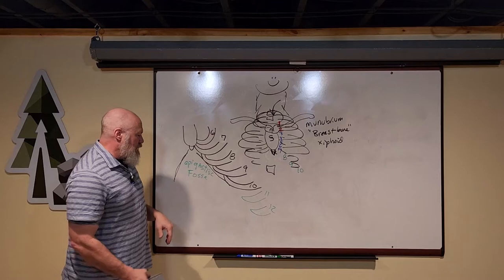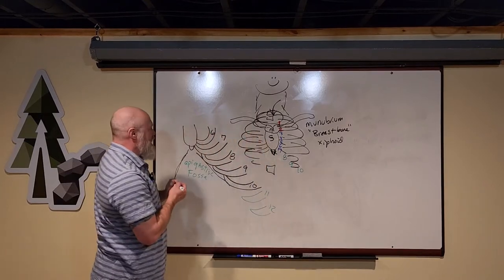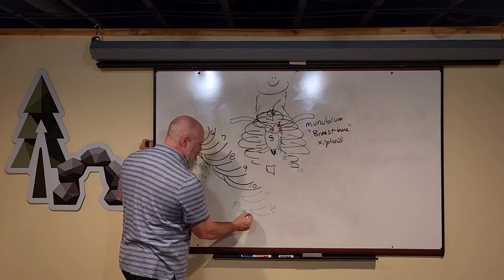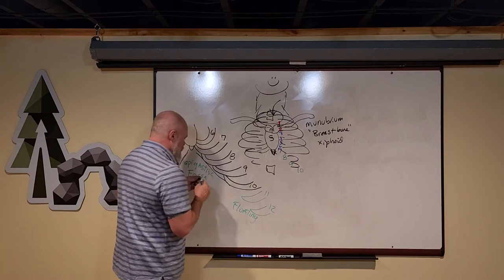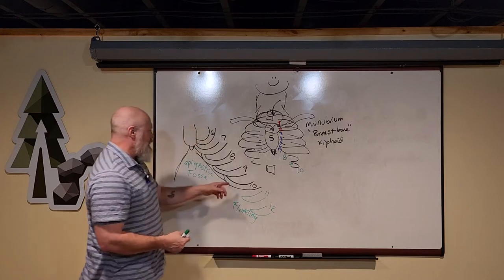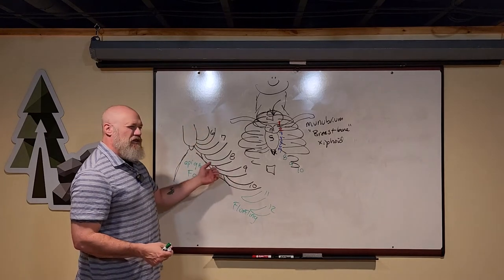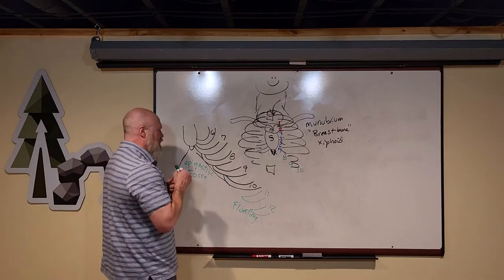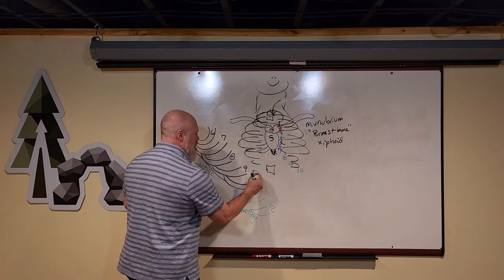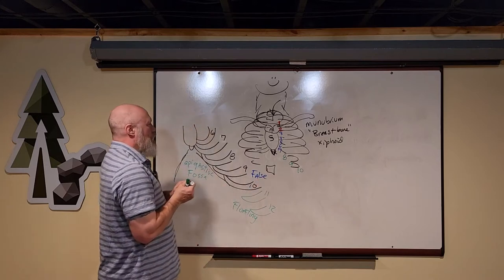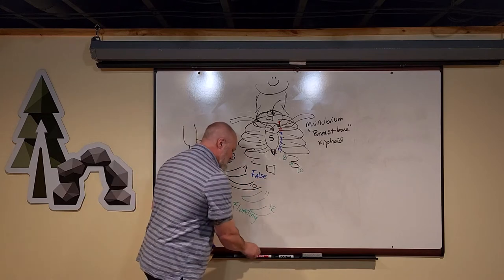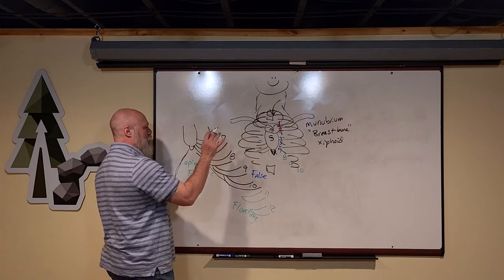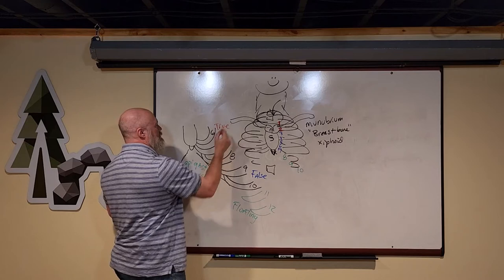The ribs are also categorized in a couple different ways. I talked about 11 and 12 being your floating ribs. The ribs that attach indirectly via their costal cartilage, the anterior ends of the ribs, 10, 9, 8, are called false ribs. Those are your false ribs. And then ribs 1, 2, 3, 4, 5, 6, and 7, which articulate directly with the sternum or the manubral sternal body, are called the true ribs.